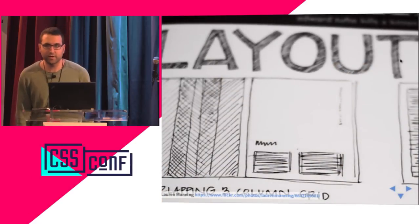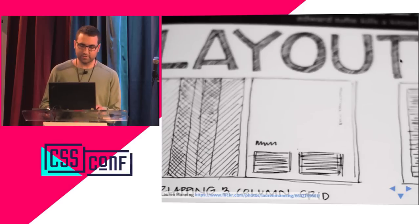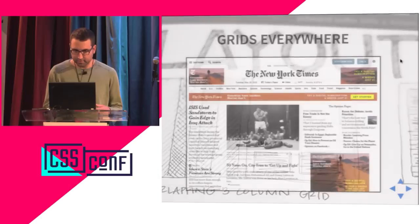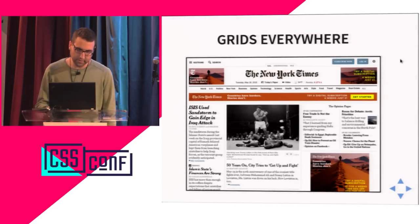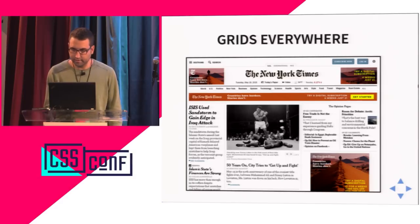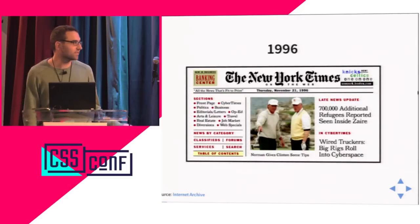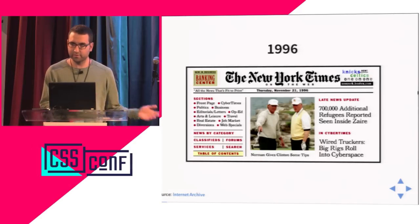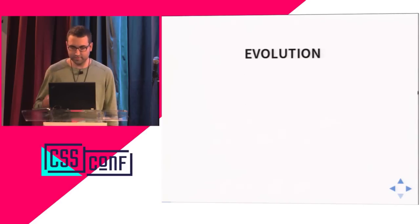Here we are going to talk about layout on the web. Most of you know that most websites use some kind of grid — you usually have a header, a footer, maybe a column on the left or on the right, so there are grids everywhere. The New York Times website is just one example, and grids have been there forever. If we go back to 1996, the New York Times website was already using a grid, some columns, a header.